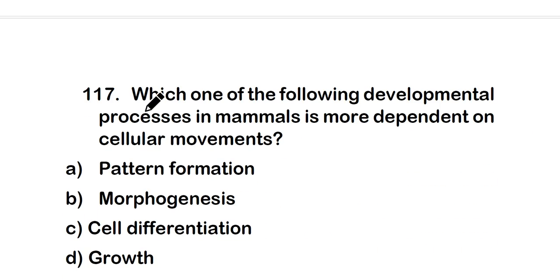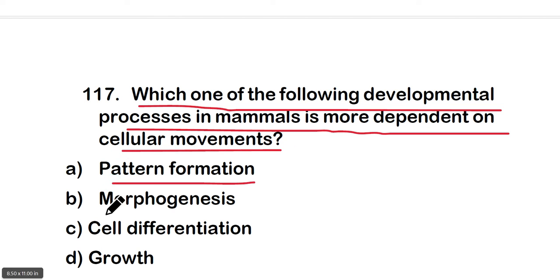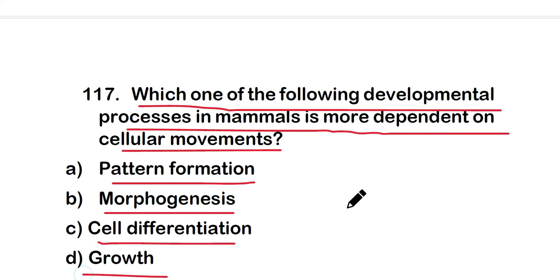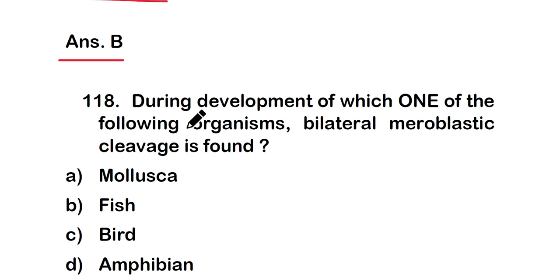Question 117: Which developmental process in mammals is most dependent on cellular movements? (a) pattern formation, (b) morphogenesis, (c) cell differentiation, or (d) growth. The correct answer is option B — morphogenesis is the developmental process in mammals most dependent on cellular movement.